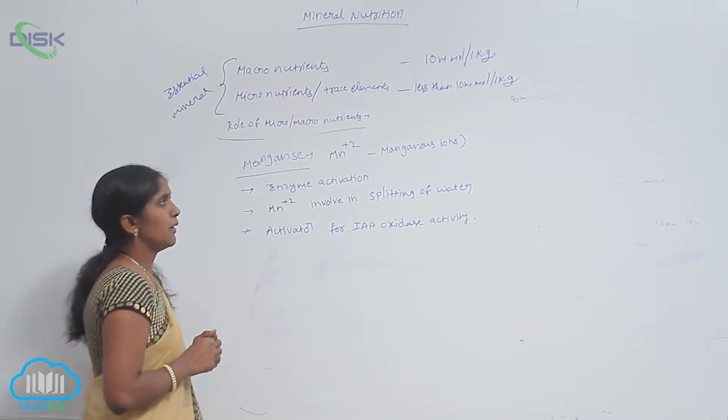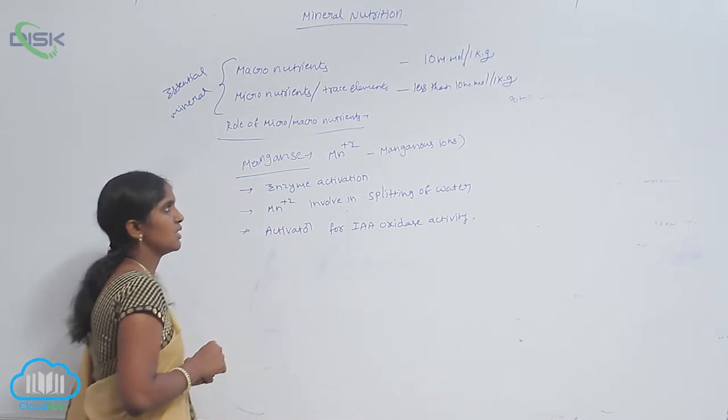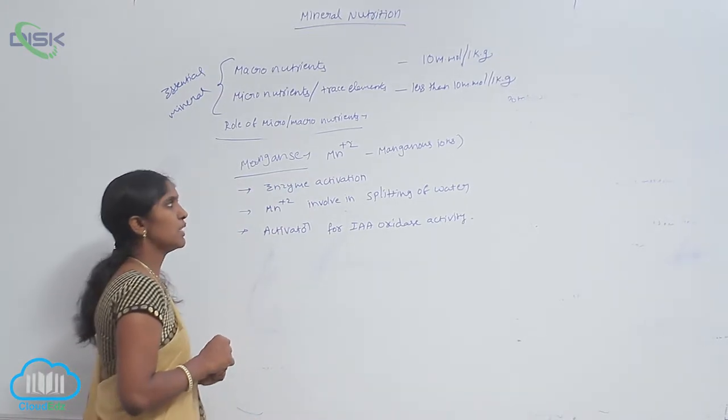Manganese is a trace element. The observed form of manganese is manganous ions, Mn+2.